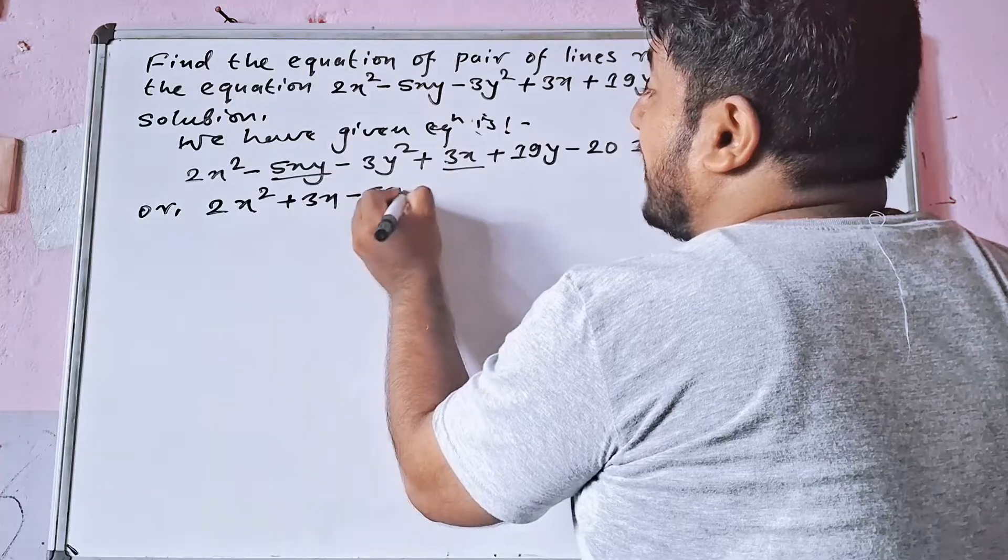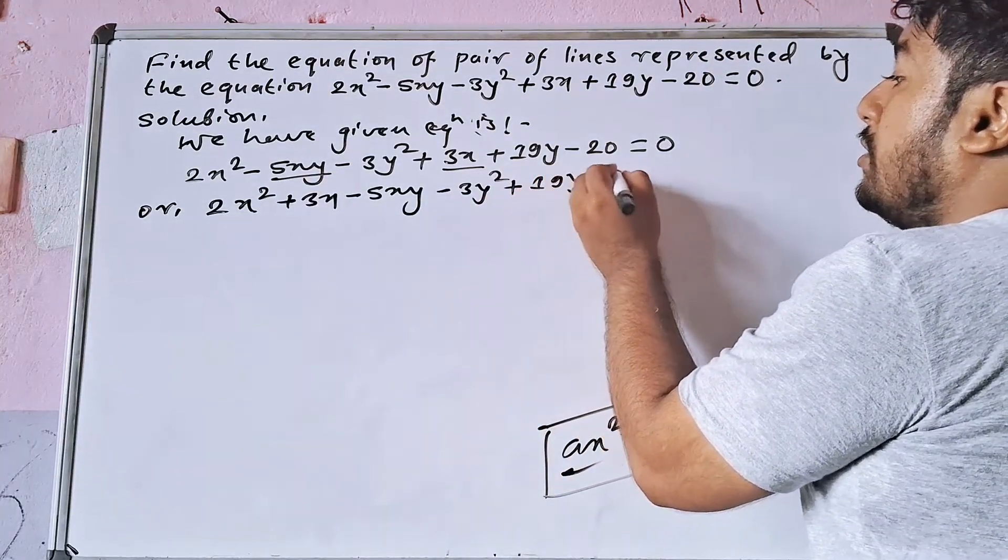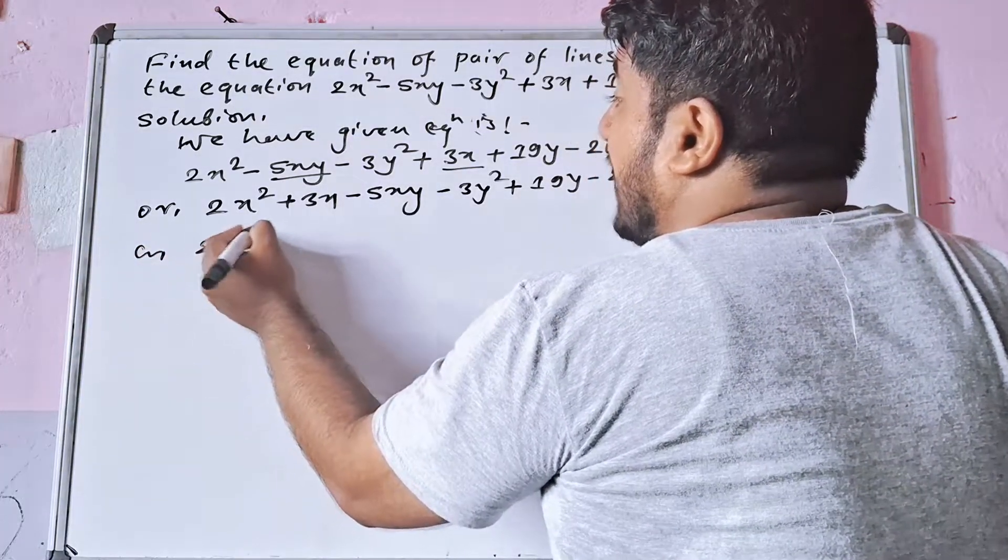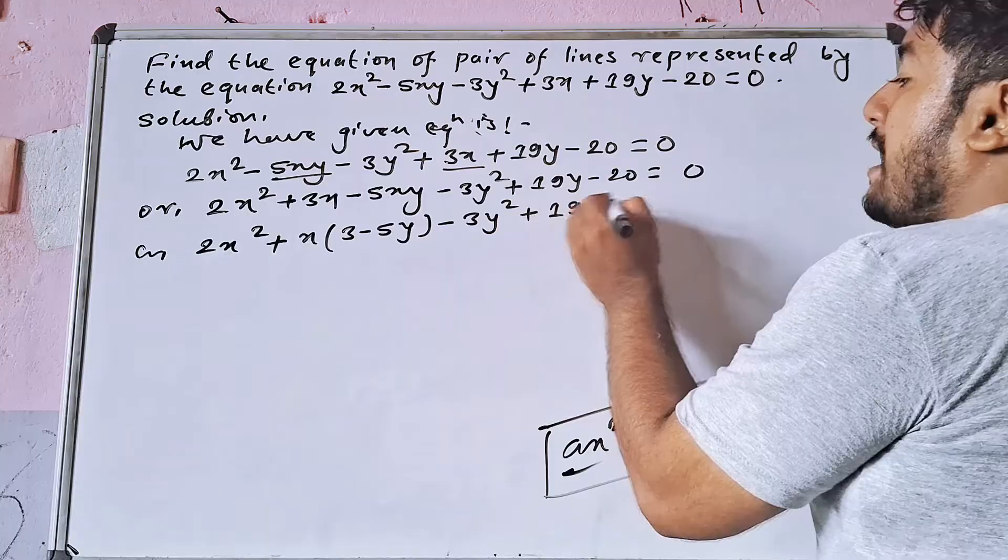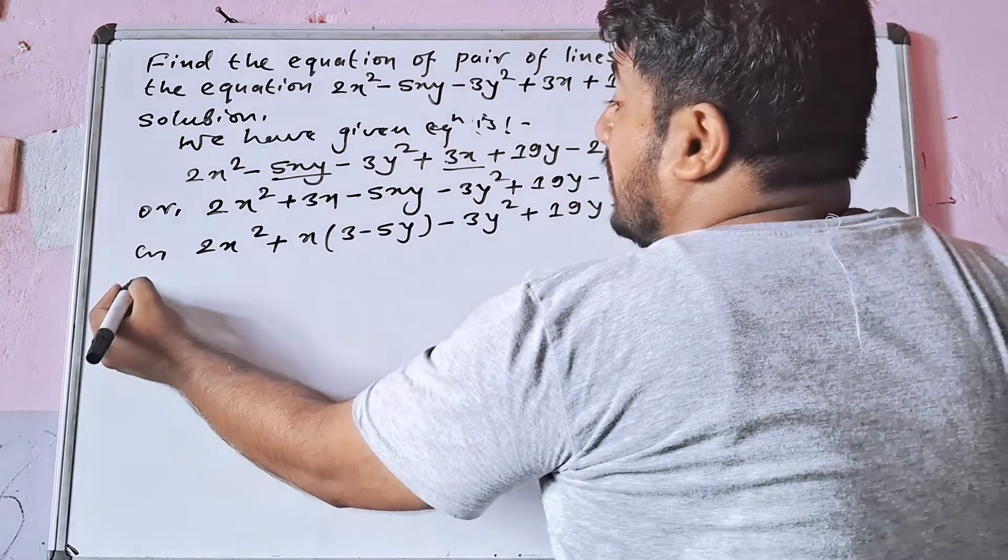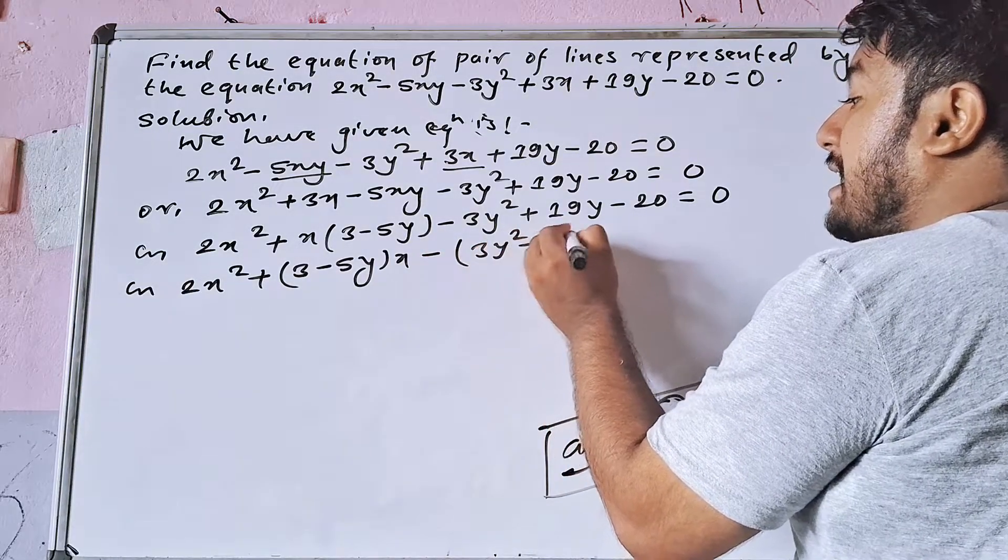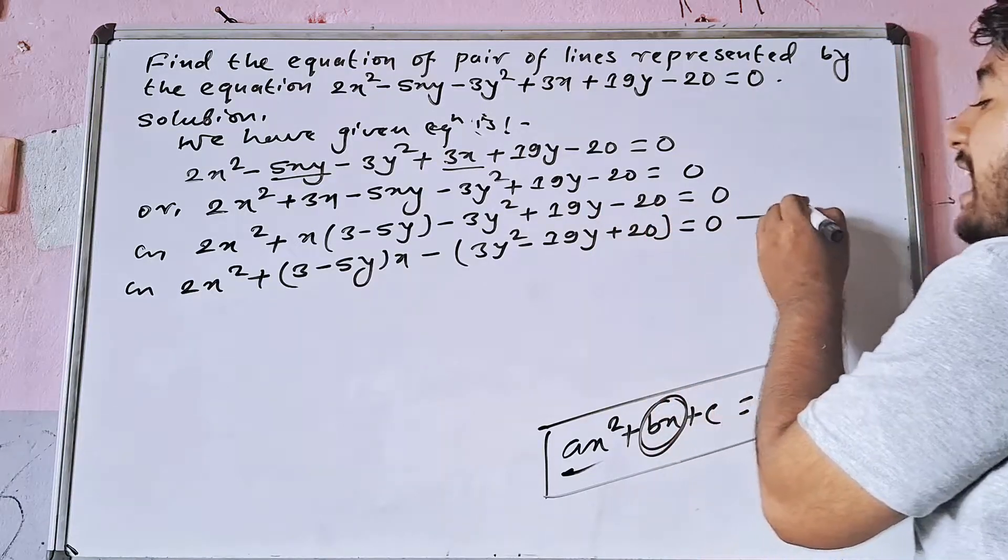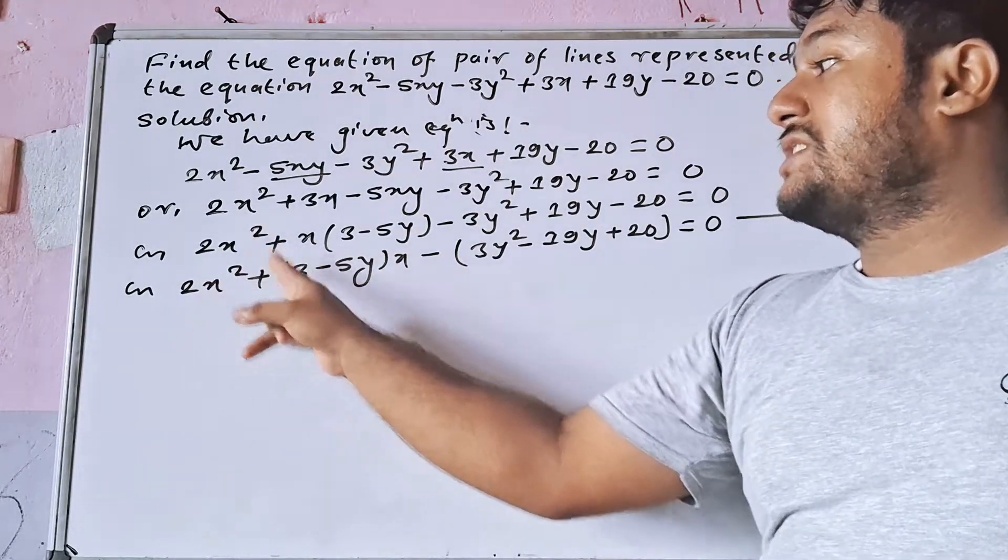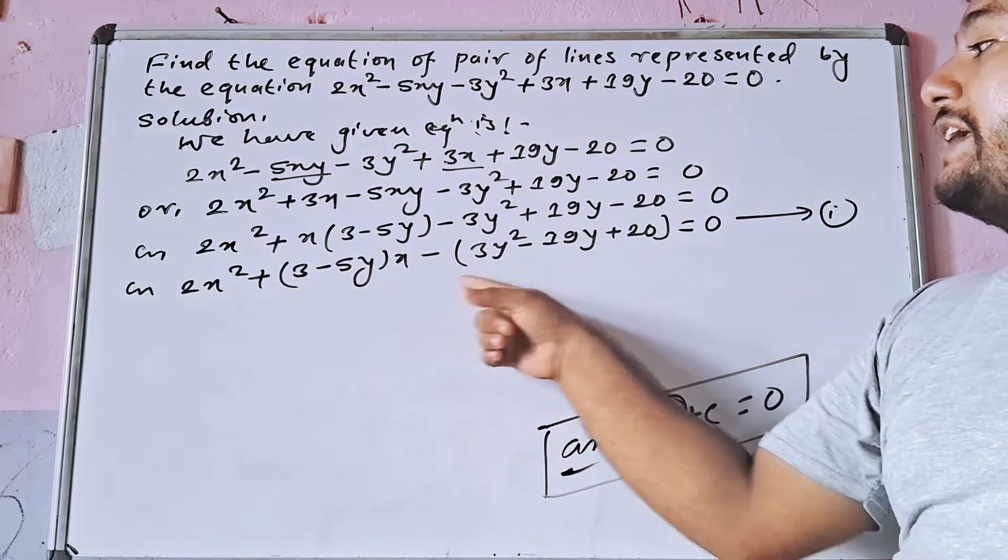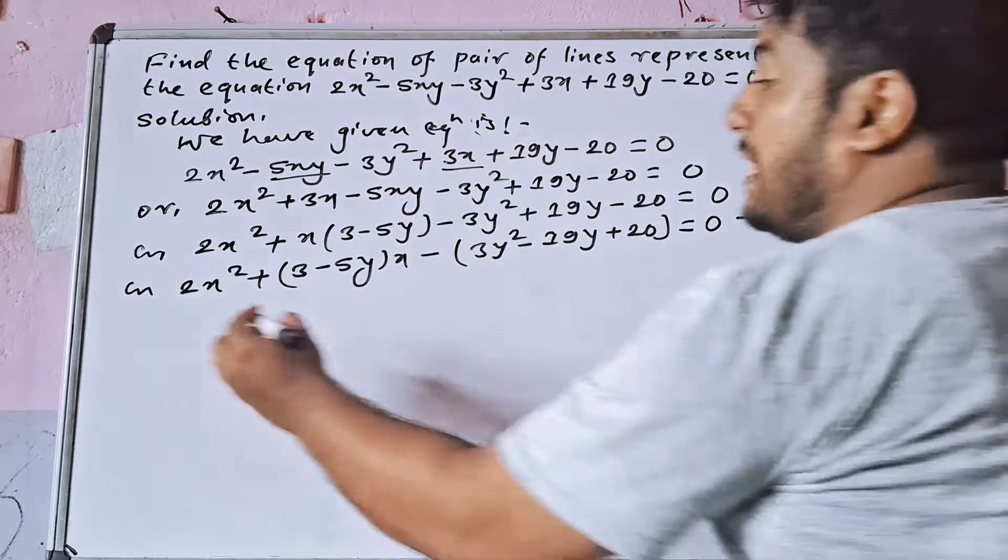Rearranging: 2x square common, then x minus 5y. This becomes 2x square plus 3 minus 5y times x minus 3y square minus 19y plus 20 equal to 0. This is like ax square plus bx plus c equal to 0.